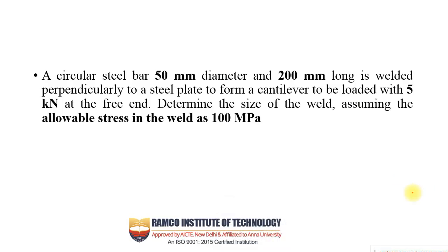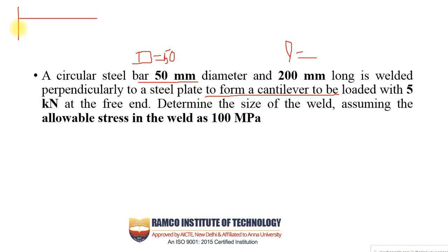This is problem number 2, where the diagram is not given, so we have to identify which case suits the problem and get the formula from the data book. A circular steel bar of 50 mm diameter and 200 mm long is welded perpendicular to a steel plate to form a cantilever, meaning it has a fixed end and a free end.